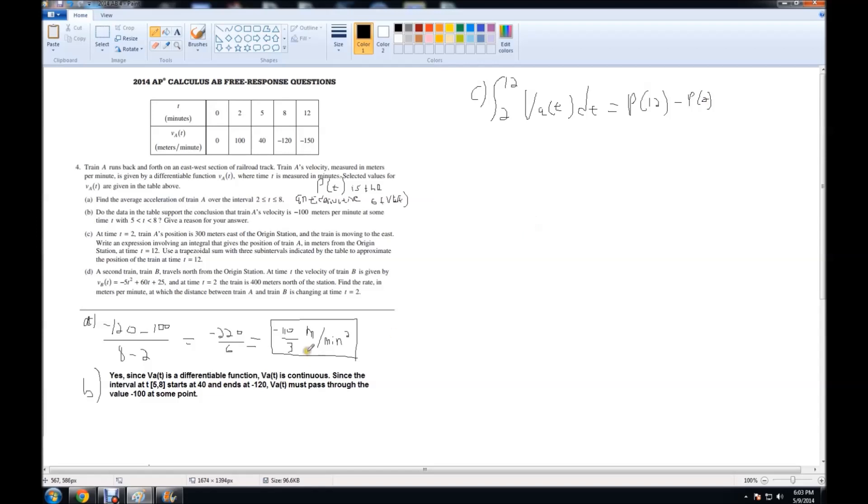In this question, it tells us that at time T equals 2, train A's position is 300 meters east. Since it's 300 meters east, this makes this a positive 300, minus a positive 300, because if you think of position, to the left of the axis would be negative, and to the right would be positive. We can rewrite P of 2 as minus 300. If you add 300 to both sides, you get the integral expression that gives you the position at T equals 12. So, the integral from 2 to 12 of VA of T dt plus 300 equals P of 12. That is the answer to the first part of question C.